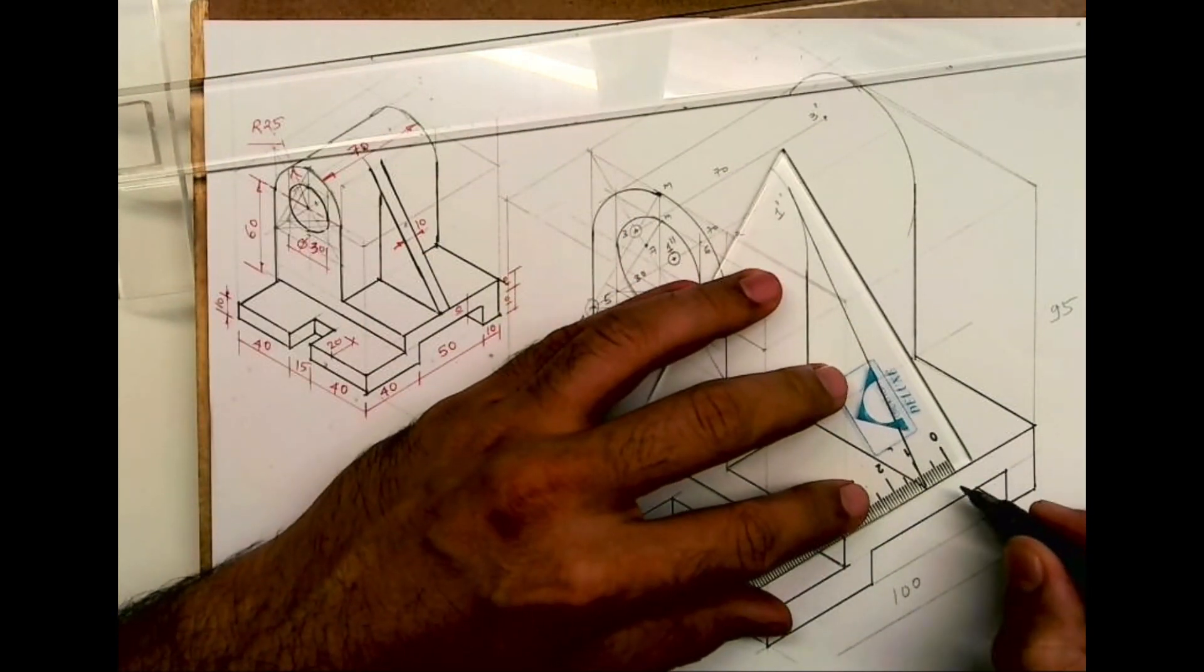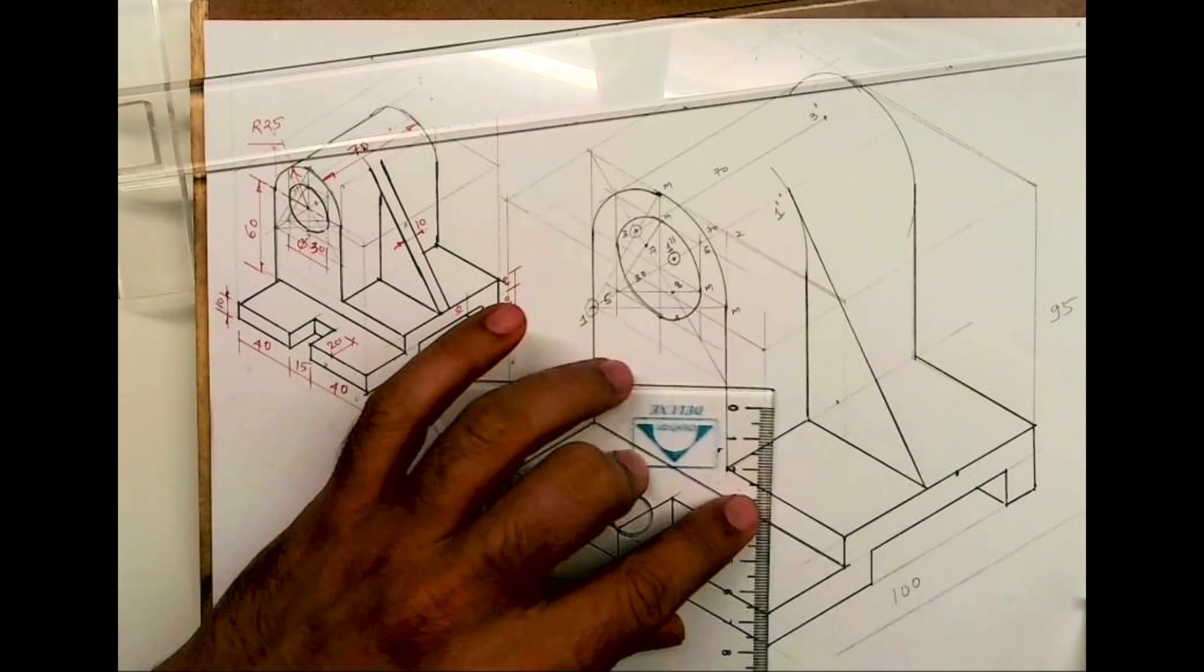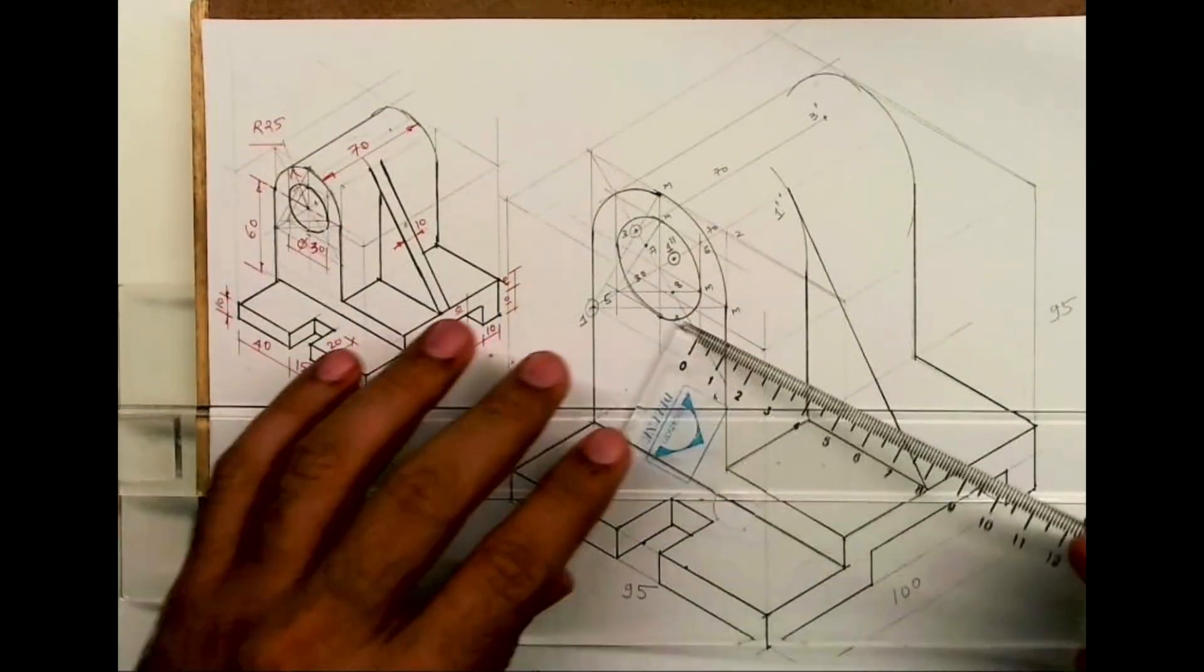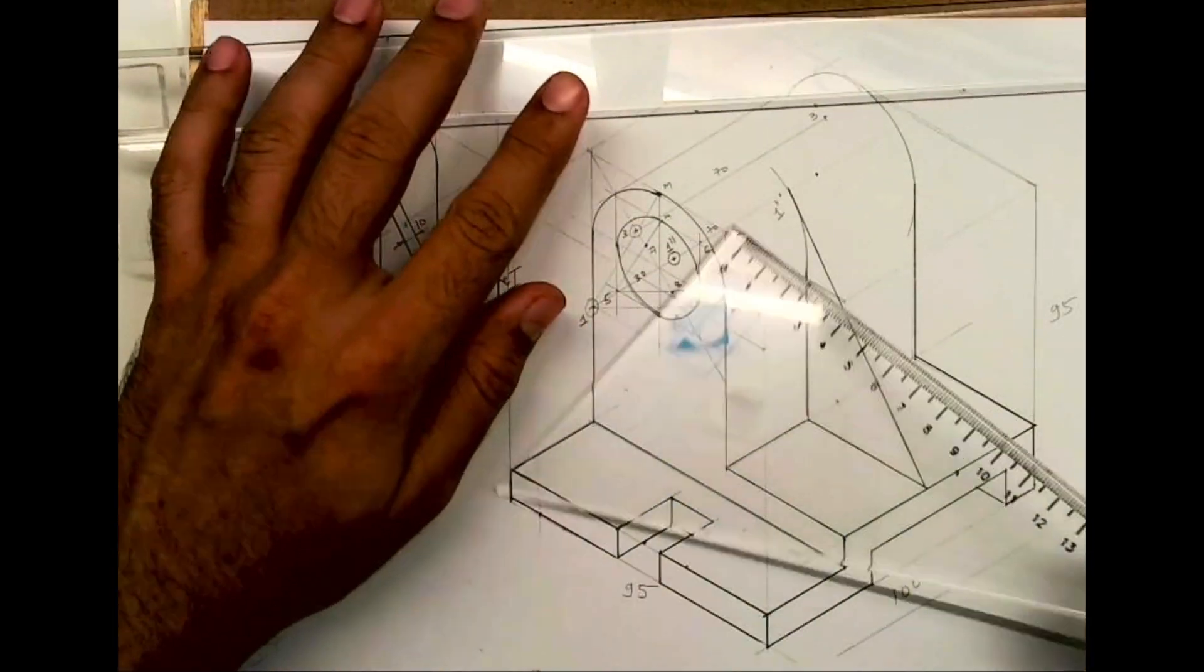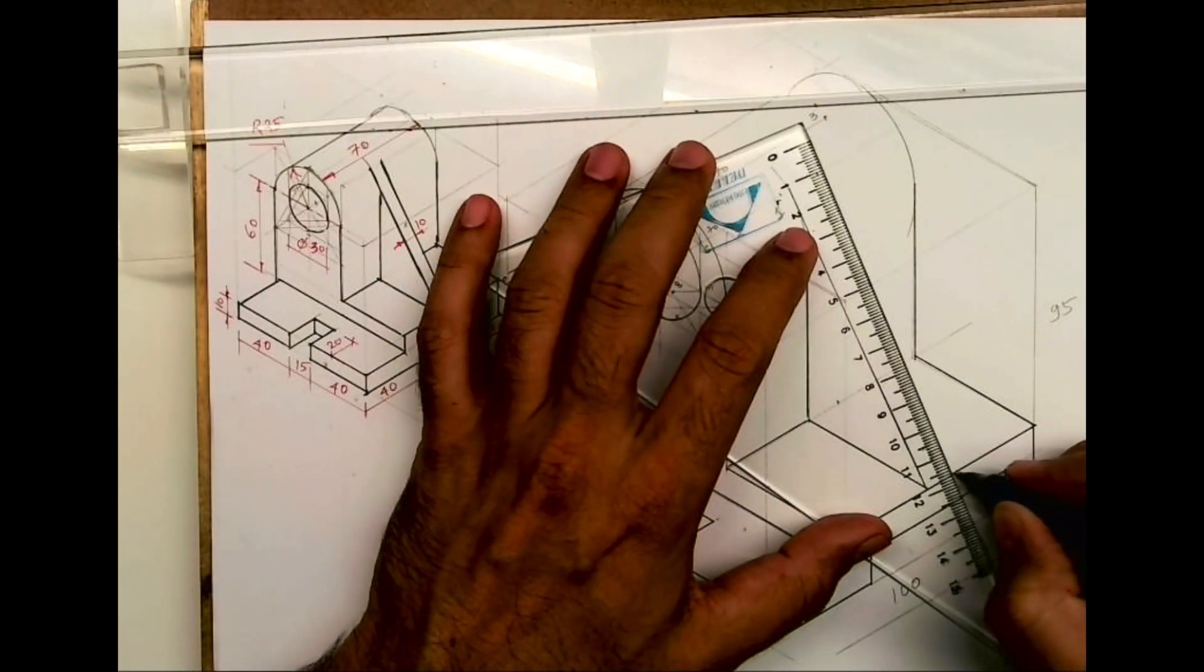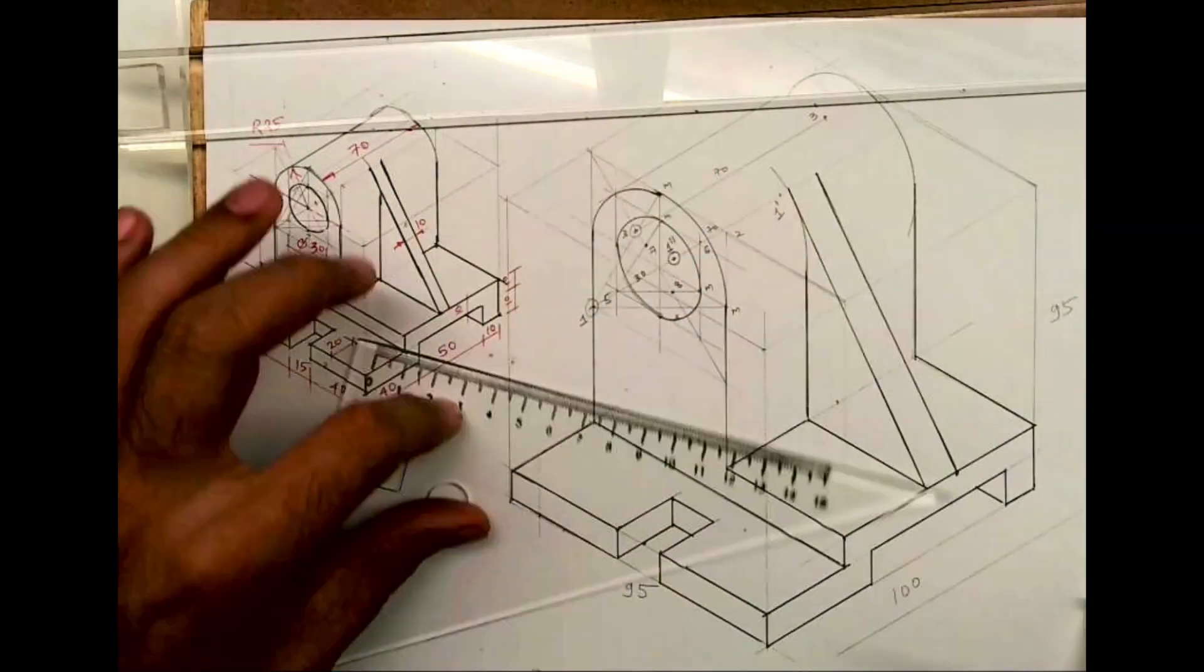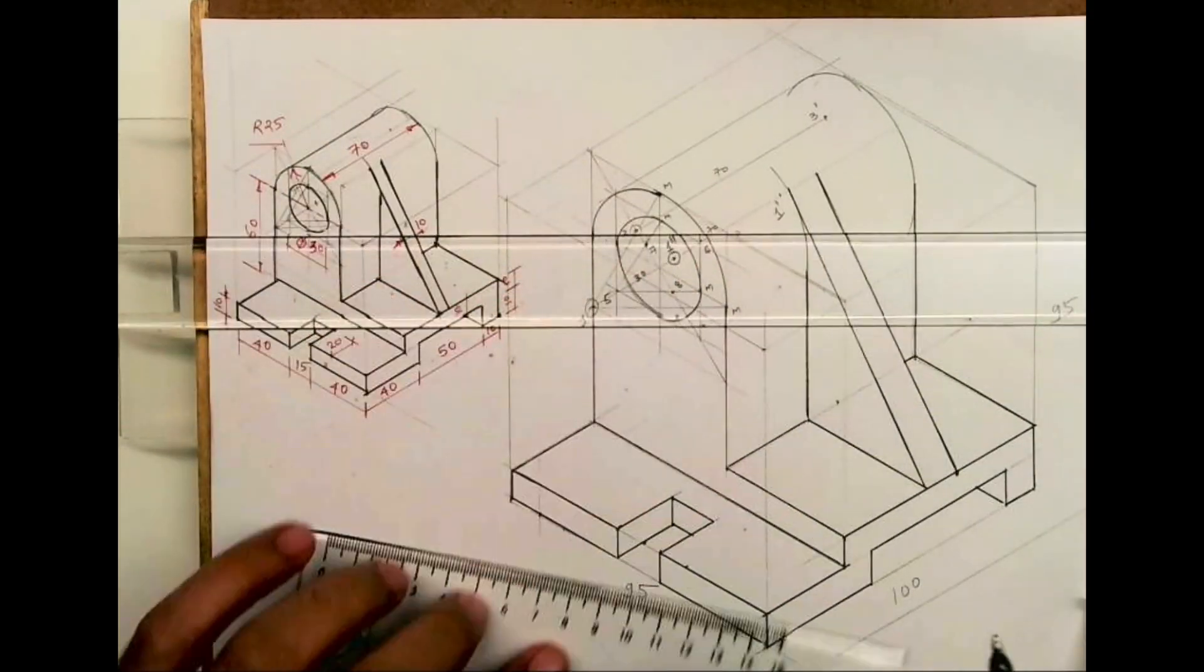Now the width is how much? 10mm. So you take 10mm, 10mm on both the side, or you can draw parallel line whatever you feel comfortable. And you can draw this. So this is how it will appear. We can darken all the lines.